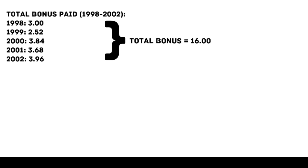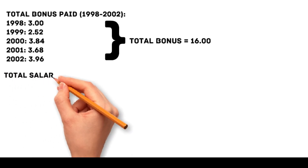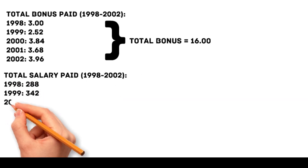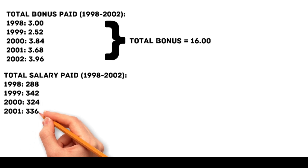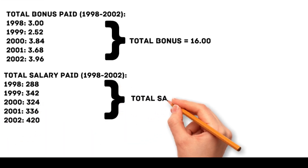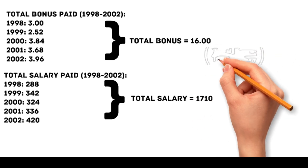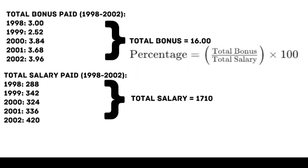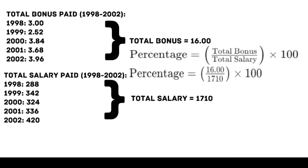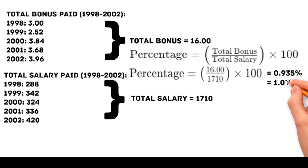Total salary paid: 1998 = 288, 1999 = 342, 2000 = 324, 2001 = 336, 2002 = 420, totaling 1,710 million. Percentage = 16 / 1,710 × 100 = 0.935%, which is approximately 1%. Thus, the closest answer is b, 1%.